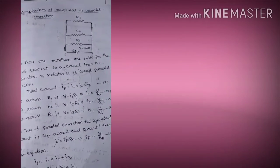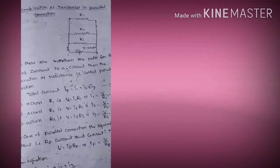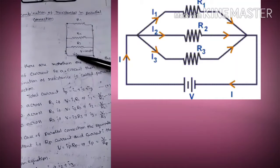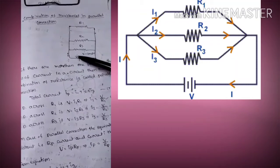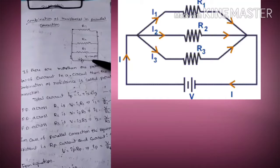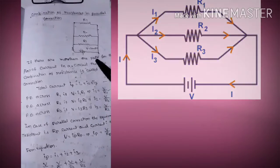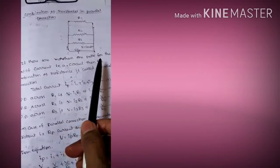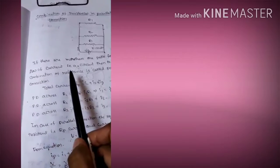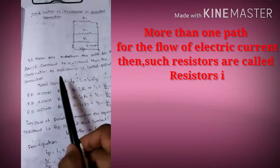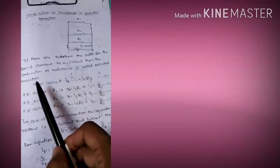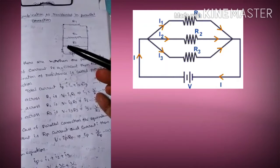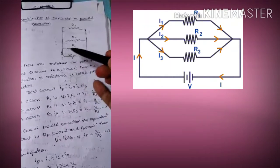We are discussing the parallel combination. Here R1, R2, and R3 are connected to the battery — all positives on one side and all negatives on one side. In a parallel connection, if there is more than one path for the flow of current in a circuit, then the combination of resistances is called a parallel combination. In series there is only one path, but here the current flows through more than one path.